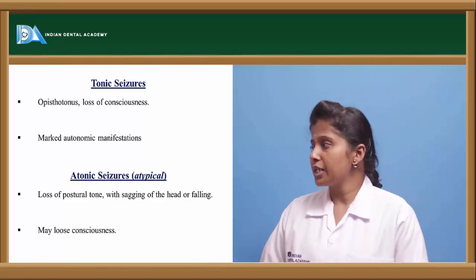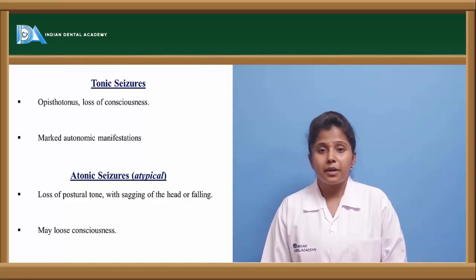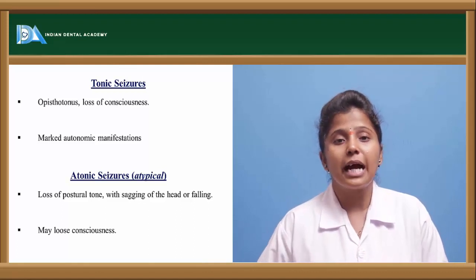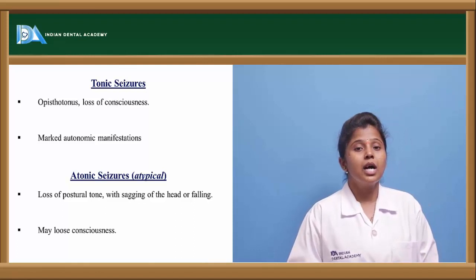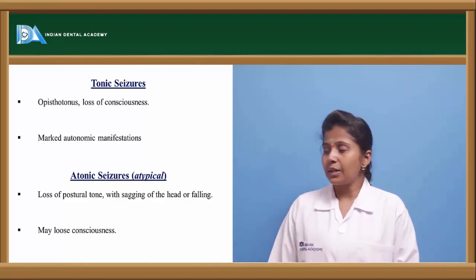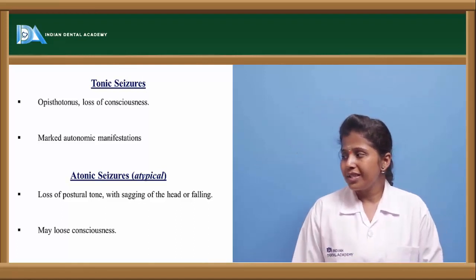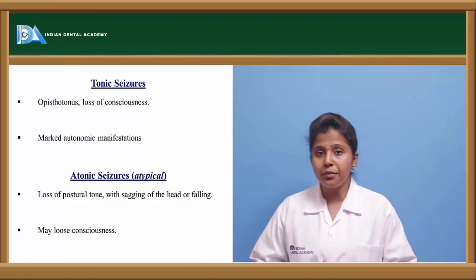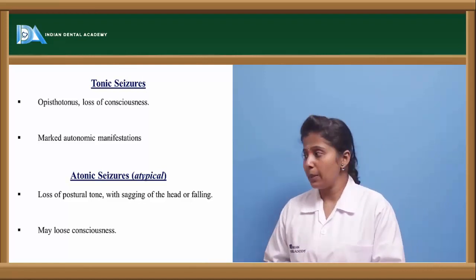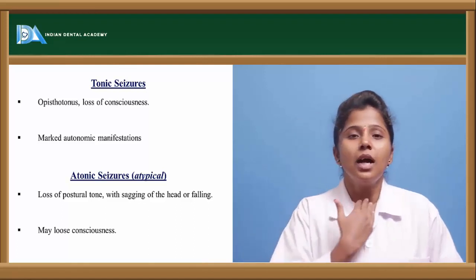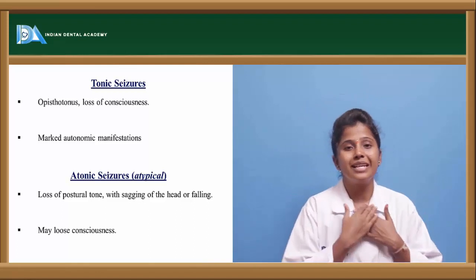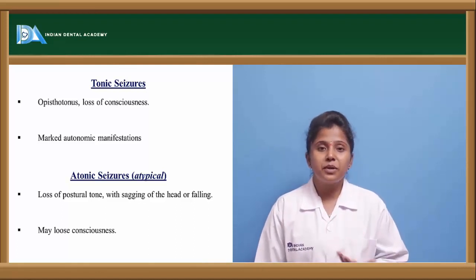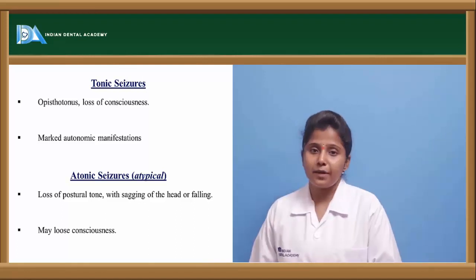Tonic seizures cause loss of consciousness and are related to disturbances in the autonomic nervous system. Atonic seizures (also called atypical seizures) cause loss of posterior tone, leading to sagging of the head or falling. The person's head movement is altered because the muscles and nerves in the neck region are impaired, and sometimes the person may lose consciousness.